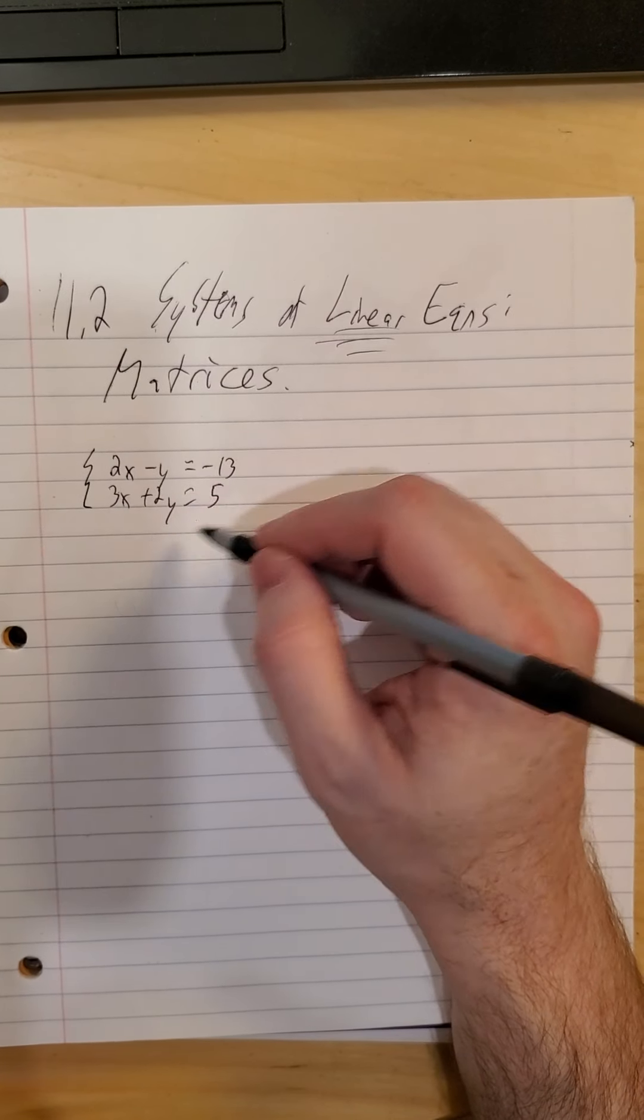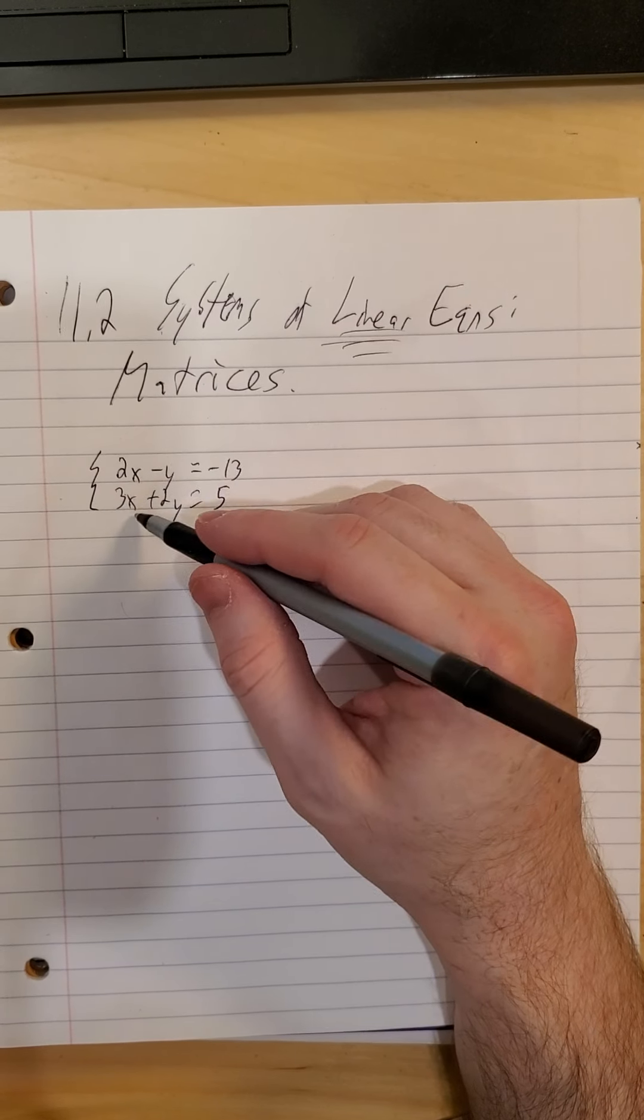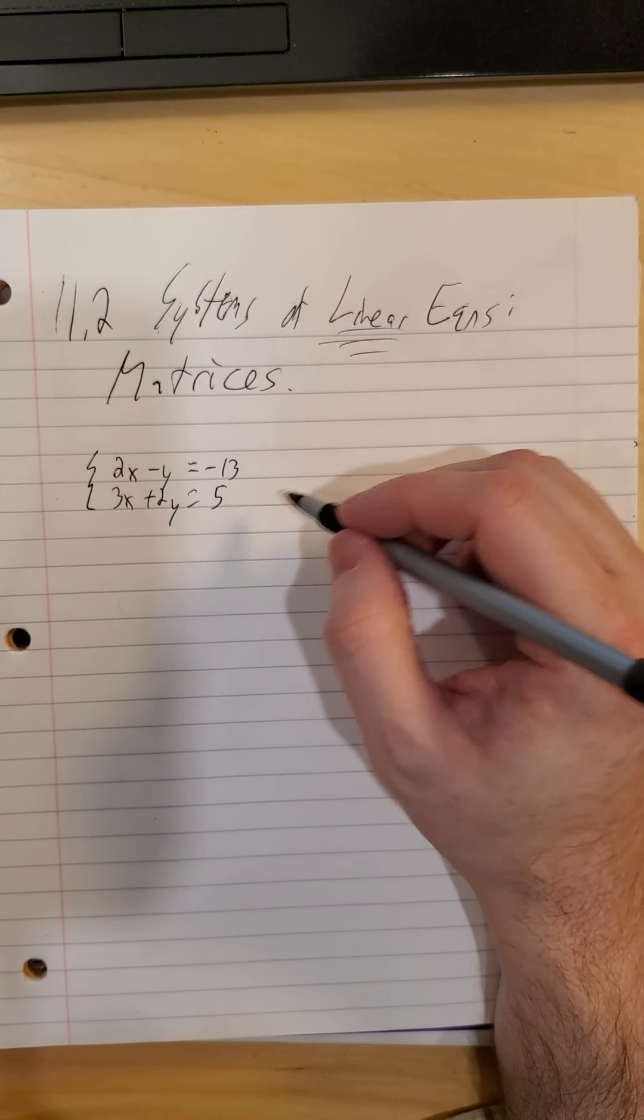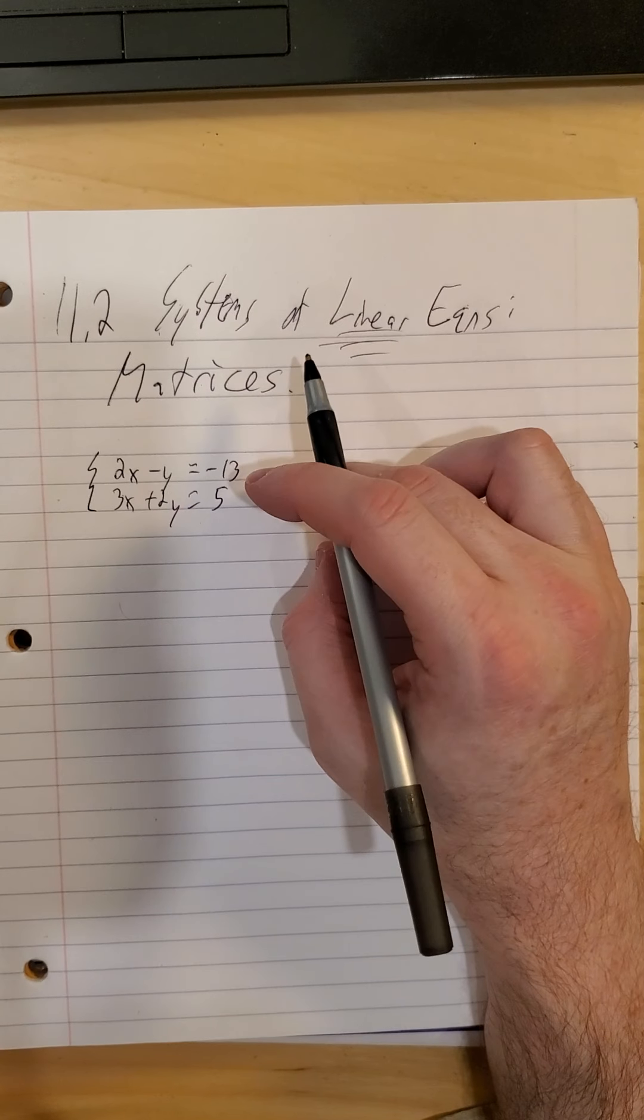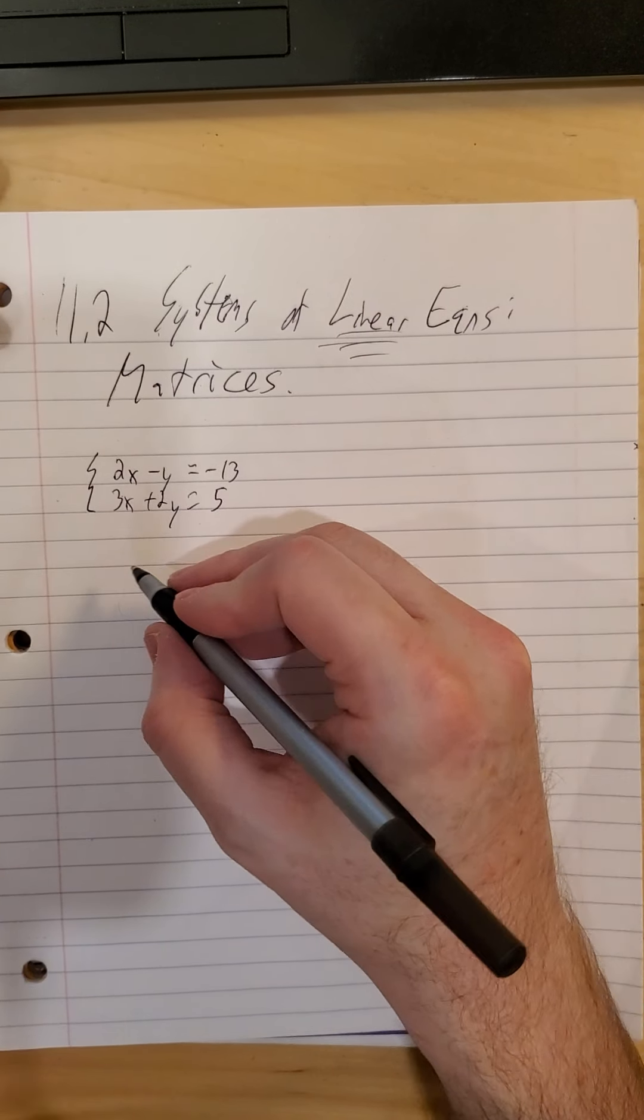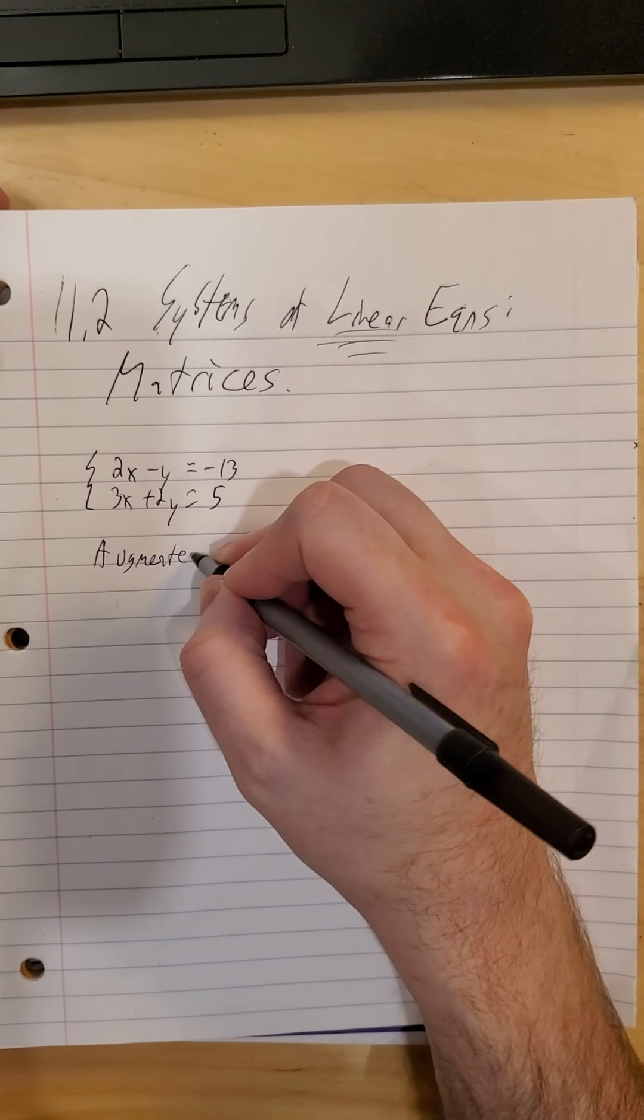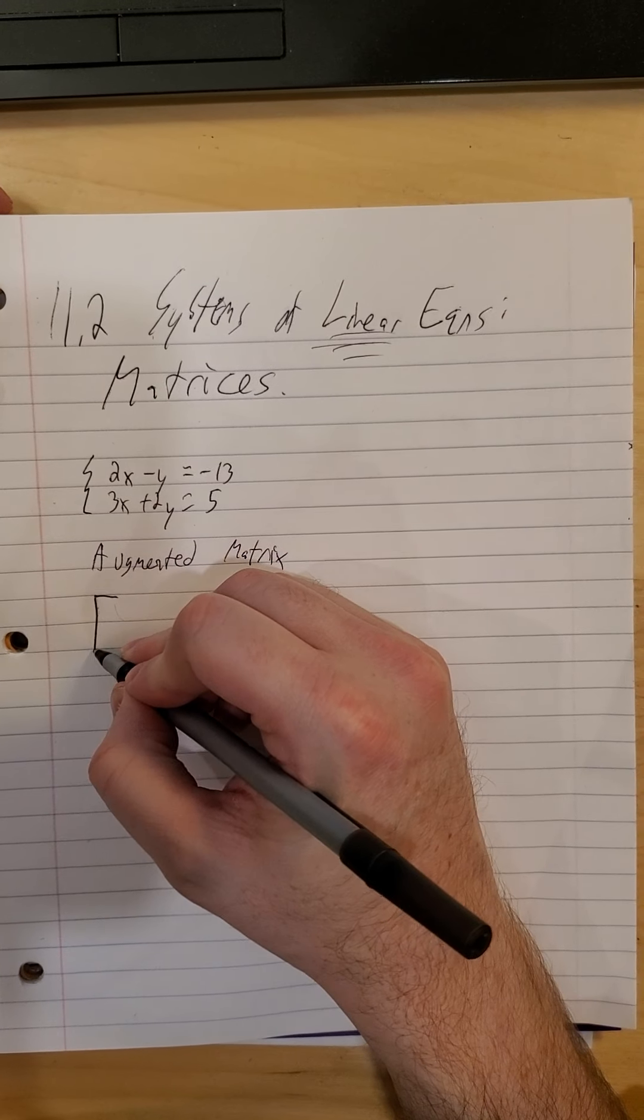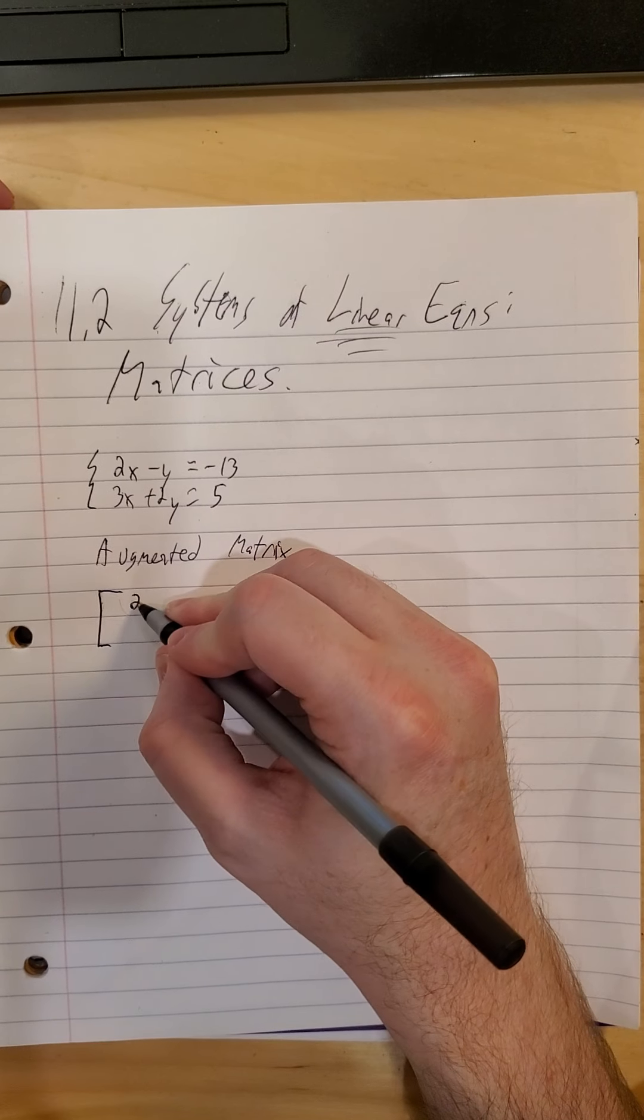So the idea with a matrix is since we know that these variables are all raised to the first power, the action is really in the coefficients. So this is kind of like our work with synthetic division where really the important parts were happening just with the coefficients. So to represent that same system, we go with what's called an augmented matrix.